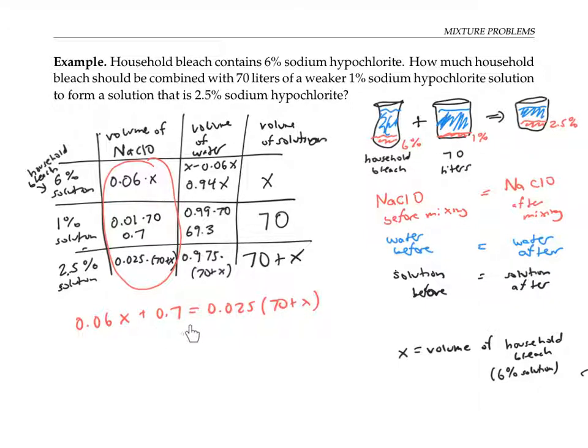Since I don't like all these decimals, I'm going to multiply both sides of my equation by, let's see, 1000 should get rid of all the decimals. After distributing, I get 60x plus 700 equals 25 times 70 plus x. Distributing some more, I get 60x plus 700 is equal to 1750 plus 25x.